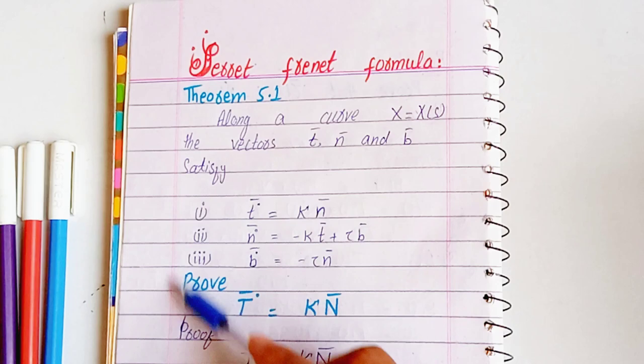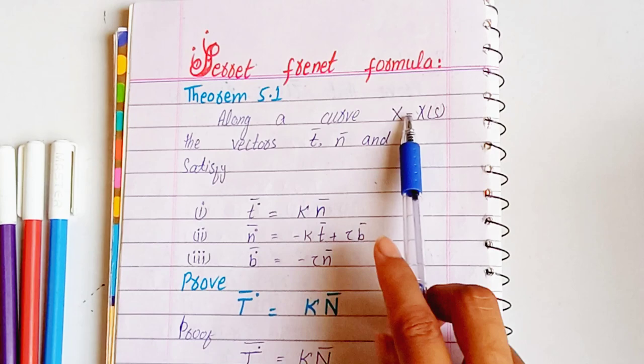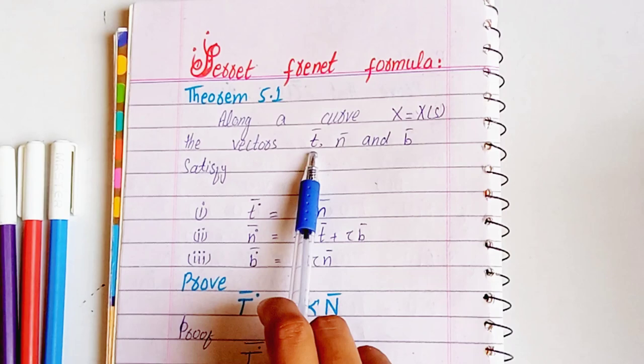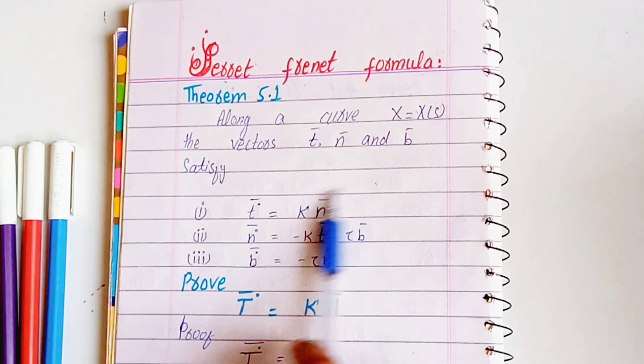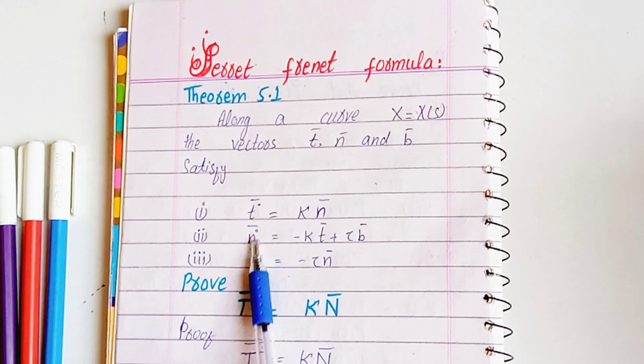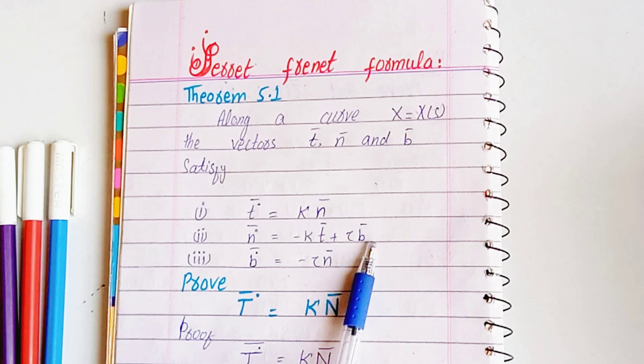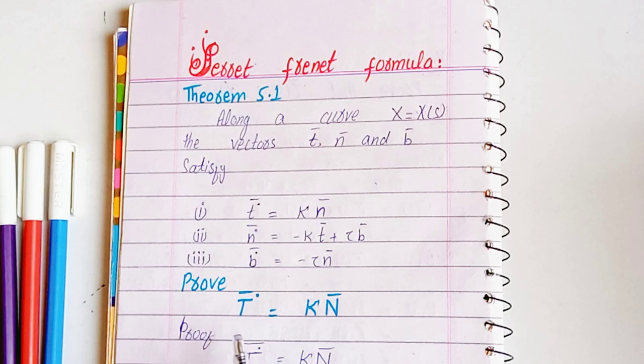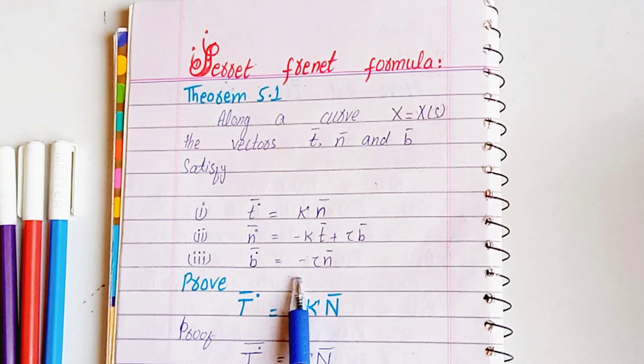What is the statement? Along a curve, the parameter used is S. We have the vectors T, N, and B. The derivative of T with respect to S is kappa into the normal vector N. The derivative of N with respect to S is minus kappa T plus tau B. The derivative of B with respect to S is minus tau into the normal vector.